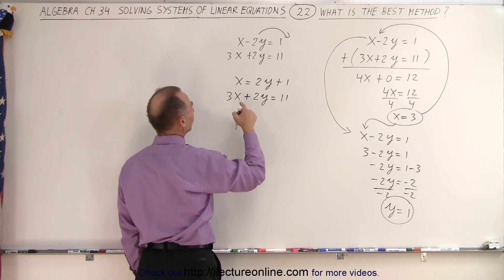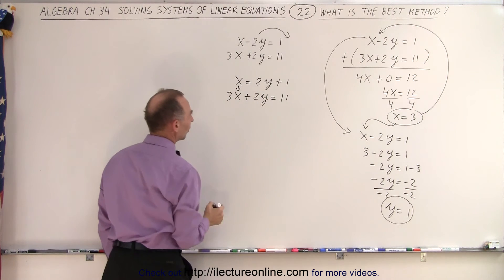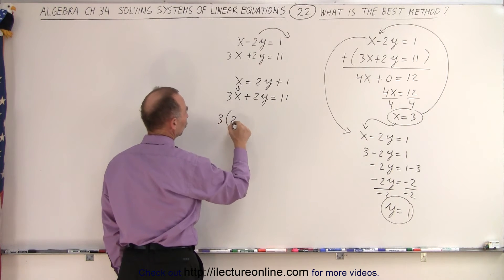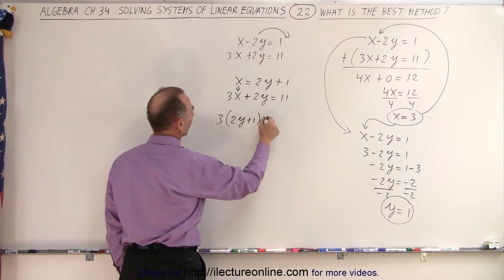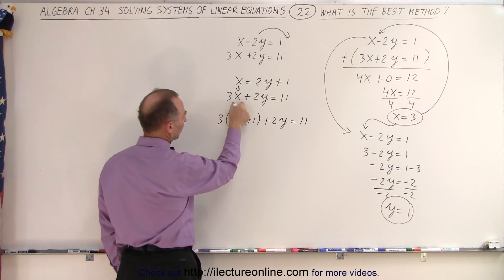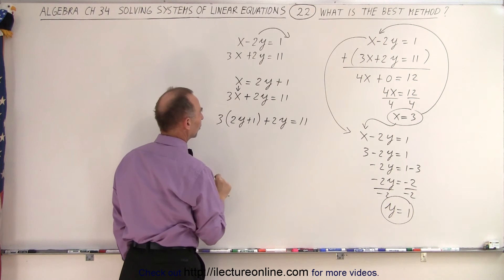And now I'm going to substitute what x is equal to in terms of y into my second equation. So now I write 3 times instead of x, 2y plus 1 plus 2y is equal to 11. So notice all I did was replace the x in the second equation by what x is equal to from the first equation.